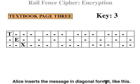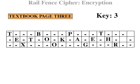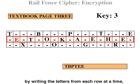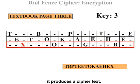Alice inserts the message in a diagonal format, like this. By writing the letters from each row at a time, it produces a cipher text.